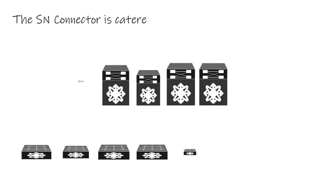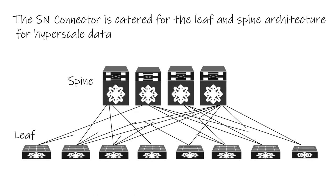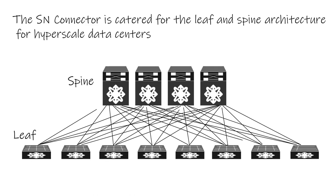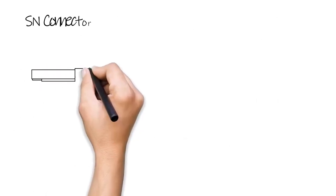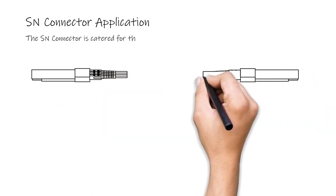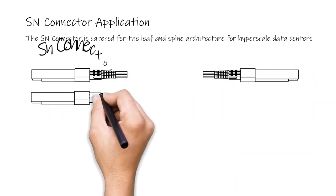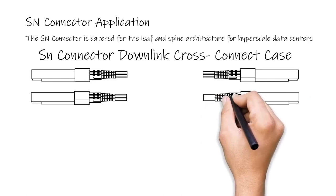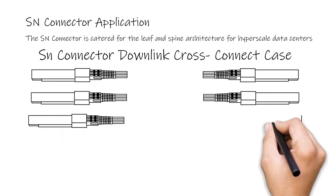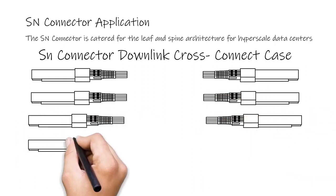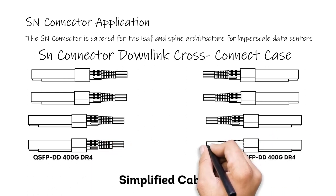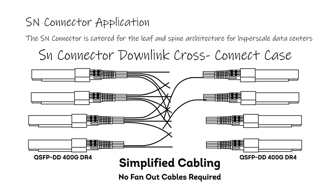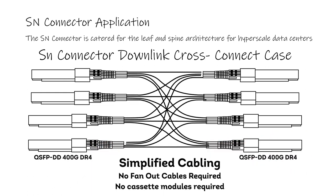This makes the SN connector ideal for the leaf and spine architecture adopted by hyperscale data centers. In the leaf and spine architecture, all the leaf switches are interconnected to all the spine switches. And by using the SN, you can perform the breakout directly from the transceiver. With this, you can simplify your cabling by eliminating the use of fan-out cables or cassette modules.